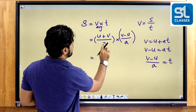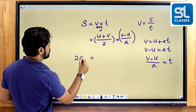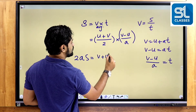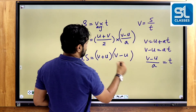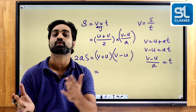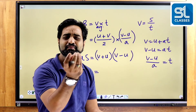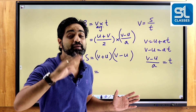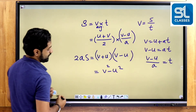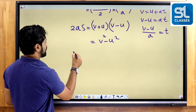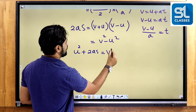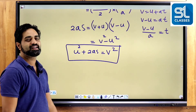The denominator becomes 2A. Using the identity A squared minus B squared equals (A plus B)(A minus B), we get V plus U into V minus U equals V squared minus U squared. Therefore V squared minus U squared equals 2AS, which gives V squared equals U squared plus 2AS. The third equation.